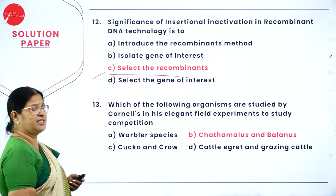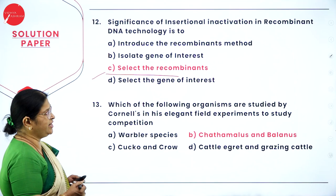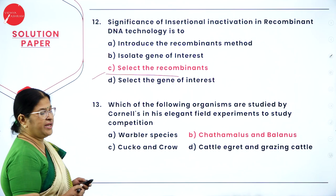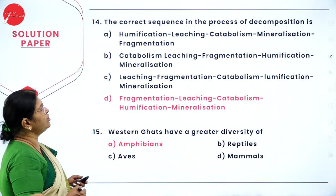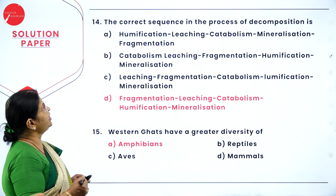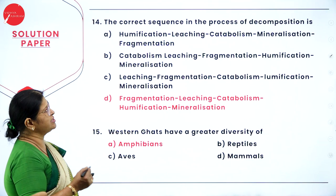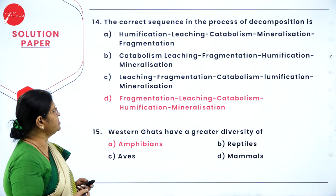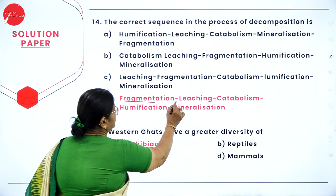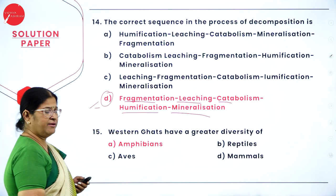Question 13: organisms studied by Connell in his elegant field experiment to study competition — option B: Chthamalus and Balanus. Question 14: the correct sequence in decomposition — the sequence is fragmentation, leaching, catabolism, humification, mineralization, so option D is the right answer.